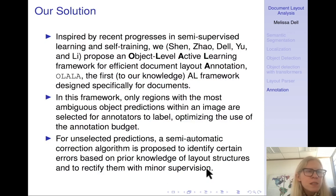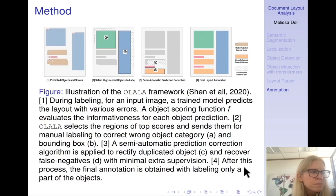Inspired by recent progress in semi-supervised learning and self-training, we propose what we call OLALA, object level active learning, framework for efficient document layout annotation. It's the first active learning framework designed specifically for documents. In this framework, only regions with the most ambiguous object predictions within an image are selected for annotators to label, which optimizes the use of the annotation budget. For unselected predictions, in evaluating this, we use a semi-automatic correction algorithm to identify certain errors based on prior knowledge of layout structures and to rectify them with minor supervision.